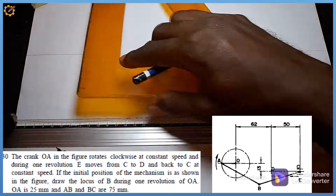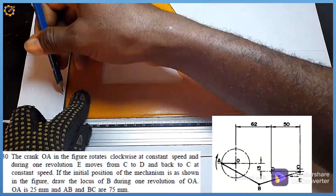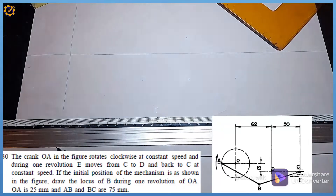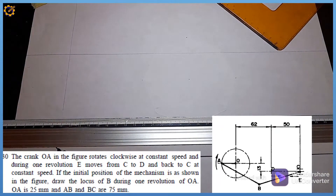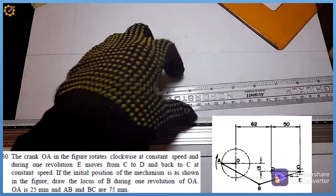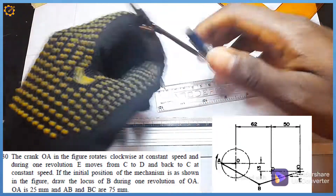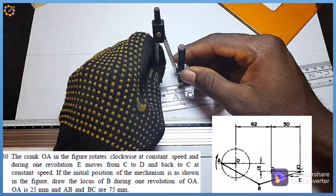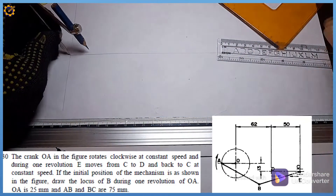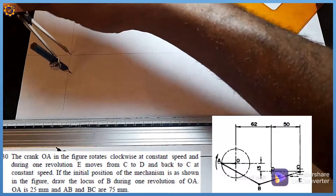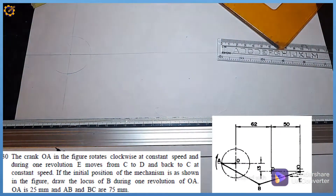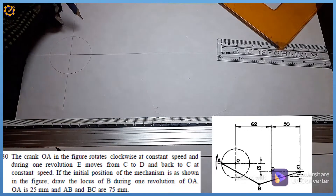After producing the horizontal line, I produce a perpendicular line to it. We are told that the crank OA is 25 millimeters, so I pick my compass, measure a radius of 25, and standing at the junction I produce this circle, as you can see on the screen.